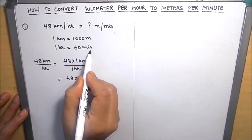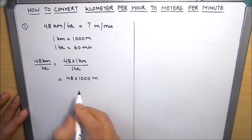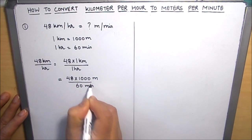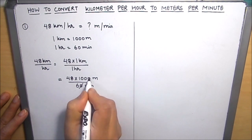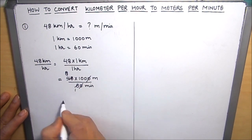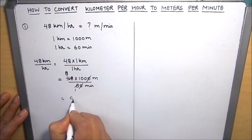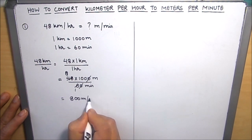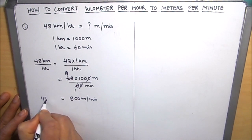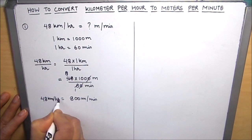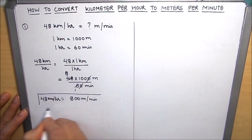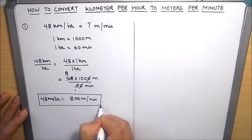In place of 1 hour, we are going to write 60 minutes because we need meters per minute. Now this gets cancelled — 6 times 1 and 6 times 8 — so this becomes 800 meters per minute. So 48 kilometers per hour is equal to 800 meters per minute. This is our answer.